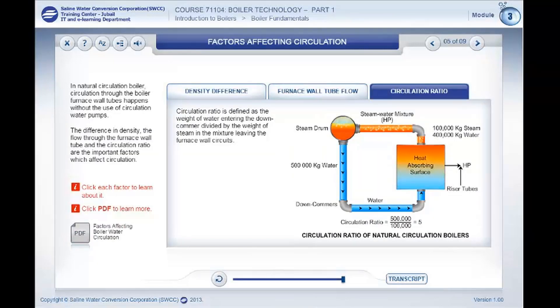Circulation ratio is defined as the weight of water entering the downcomer divided by the weight of steam in the mixture leaving the furnace wall circuits.